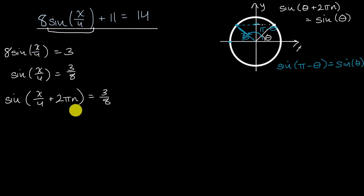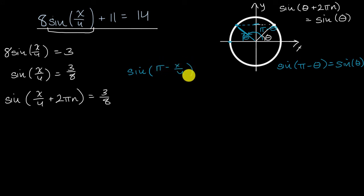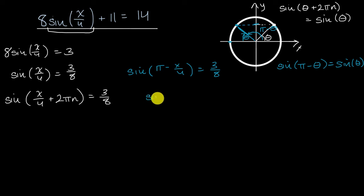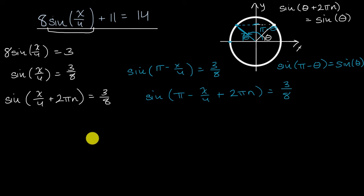So it's not just sine of X over four equals 3/8 — we can also write sine of π minus X over four equals 3/8, since X over four is the theta here. And of course we can also add or subtract 2π an arbitrary number of times, so we write: sine of π minus X over four plus an integer multiple of 2π equals 3/8. Solving both expressions together gives the broadest solution set.